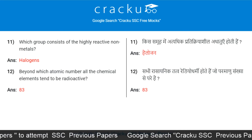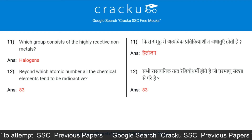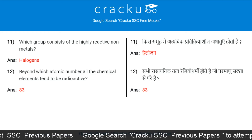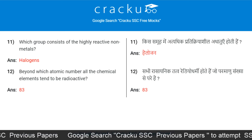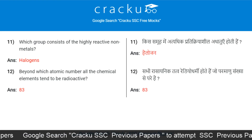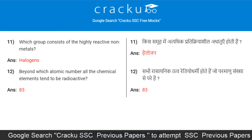Which group consists of the highly reactive non-metals? Halogens. Beyond which atomic number do all chemical elements tend to be radioactive? 83.